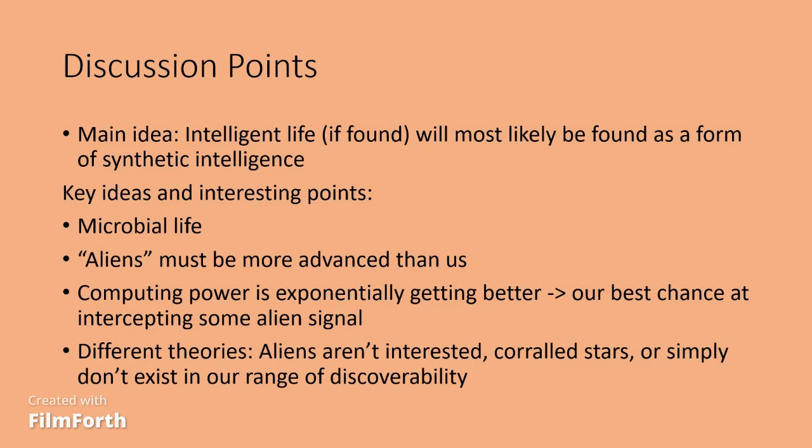In order to find intelligent life, the speaker emphasizes that we're going to need more advanced computers so we can process more signals coming in. The way it works is that we're scanning the universe for signals, more specifically radio signals, because that's what they believe would be the first type of signal to send out, since we humans discovered radio signals first. We want to cover as much ground as possible, and in order to cover all possible channels and places we can receive signals, we need advanced computers.